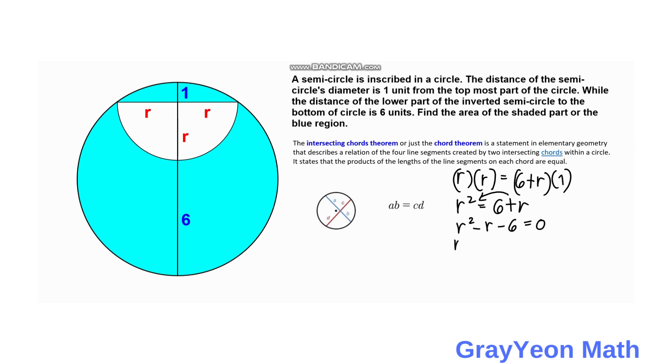Then factoring, R minus 3 times R plus 2 equal to 0. Then R minus 3 equal to 0 and R plus 2 equal to 0. So R is equal to negative 2 and R is equal to 3. But we are actually using this positive 3 here because there is no negative distance. So R is equal to 3.